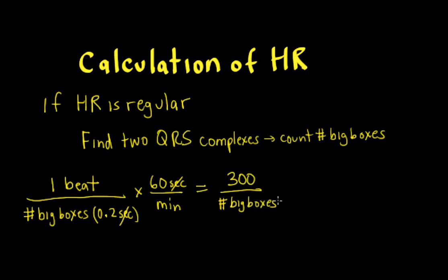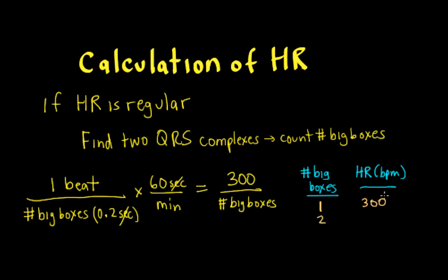So we can make a little table here of the number of big boxes in between the QRS complexes and the heart rate in beats per minute. If we counted the RR interval as one big box, 300 divided by one is 300. If the RR interval was two big boxes, 300 divided by two is 150. Three big boxes is 100. Four big boxes would be 75. Five big boxes would be 60.